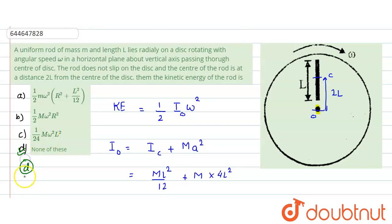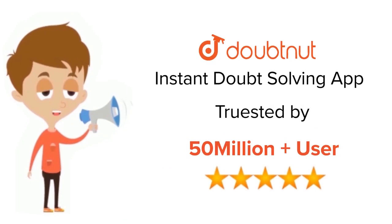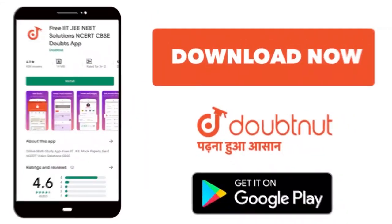So which option would be the correct option? So the correct option would be d, none of these. Hope you understood the solution. Thank you. For class 6 to 12, IIT and NEET level, trusted by more than 5 crore students, download Doubtnut today.